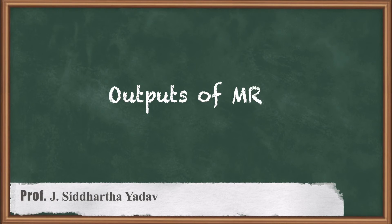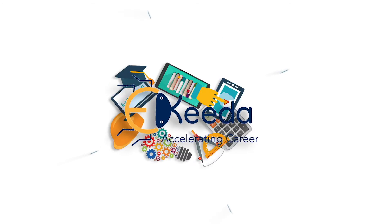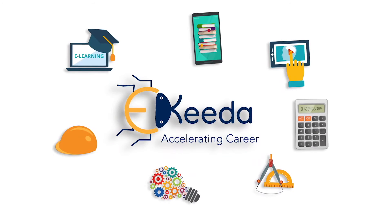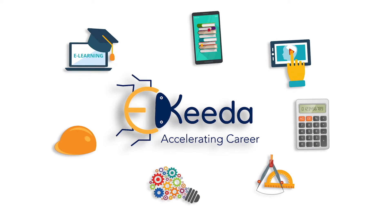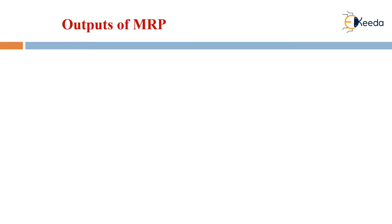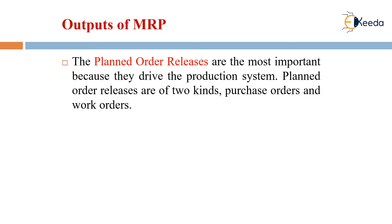Hi all, welcome to this course on PPC. Today we will be learning about the outputs of MRP. In material requirement planning, as we have learned about the inputs in the previous video, now we will be learning about the outputs of MRP. The planned order releases are the most important because they drive the production system.